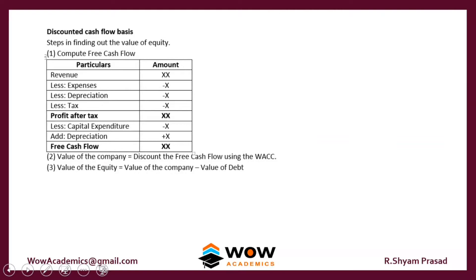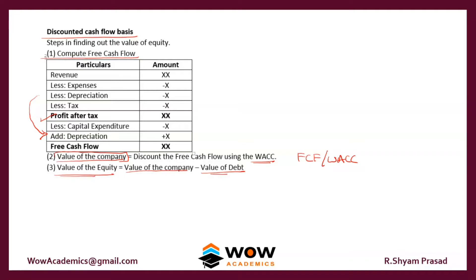There is another approach called the discounted cash flow basis. To find the value of equity, first compute the free cash flow: take revenue minus all expenses, minus depreciation, minus tax to get profit after tax, then deduct capital expenditure and add back the depreciation to get free cash flow. Then divide the free cash flow by the WACC to get the value of the company. Since the company value includes both debt and equity, you deduct the value of debt to arrive at the value of equity.